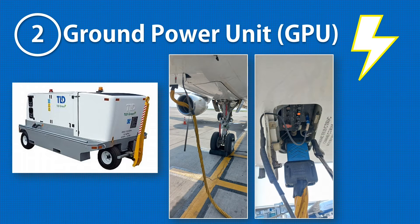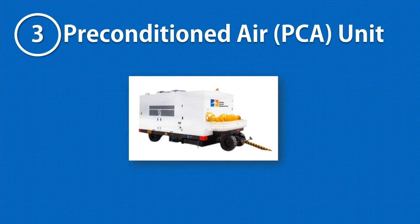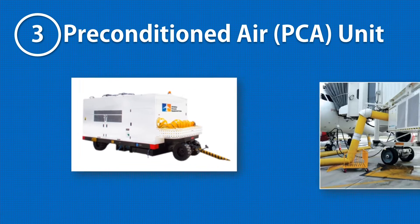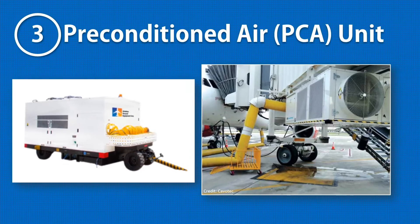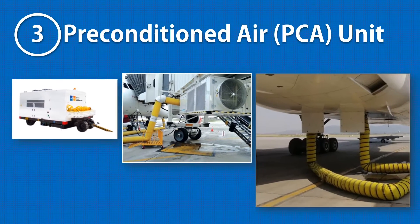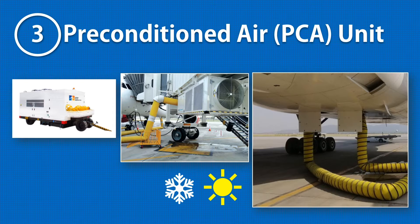A preconditioned air unit is a ground support equipment that supplies air conditioning to the aircraft on the ramp when its own air conditioning is off. In summers it provides cooling, and in winters it provides heating.